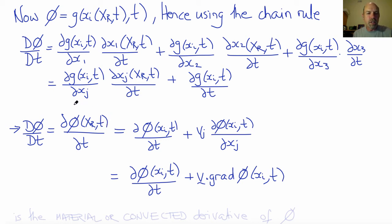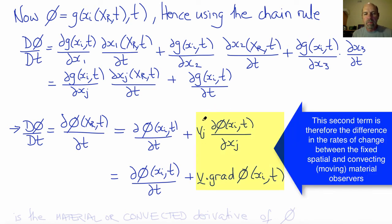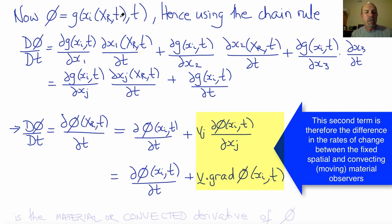The Lagrangian derivative is not quite the same as the simple time derivative that a fixed spatial observer would compute. There's an additional term that depends on the velocity and the spatial gradients of the scalar field — this is the relative rate of change between the fixed observer and the observer moving with the material particle. The material derivative is important because physical laws like conservation of mass, momentum, and energy apply to the physical particles, not to positions in space. So we need to be able to convert between Eulerian and Lagrangian derivatives, which is why we define the material or convective derivative.